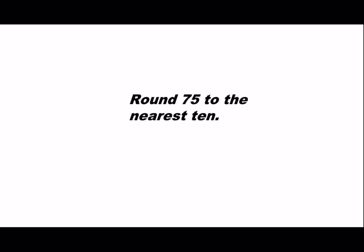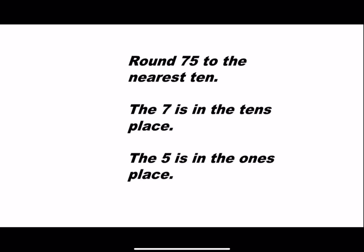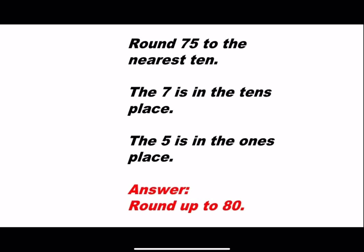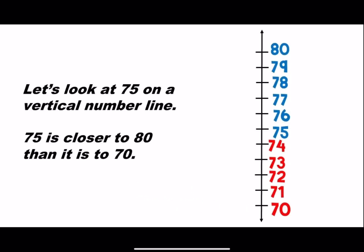Round 75 to the nearest ten. The seven is in the tens place. The five is in the ones place. Answer: we would round up to 80. Let's look at 75 on a vertical number line. 75 is closer to 80 than it is to 70.